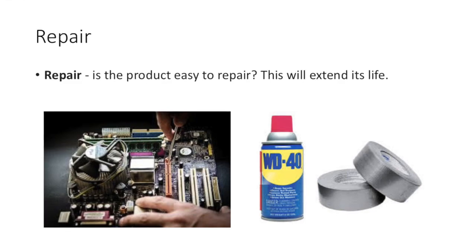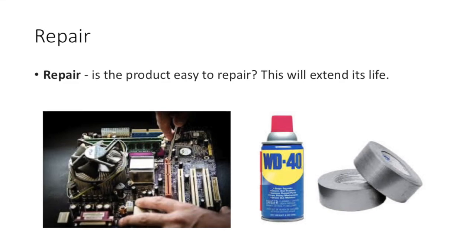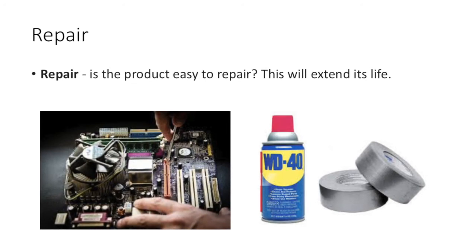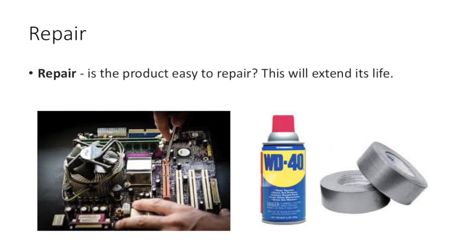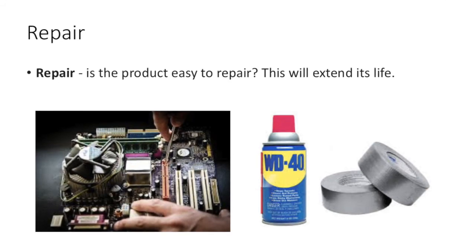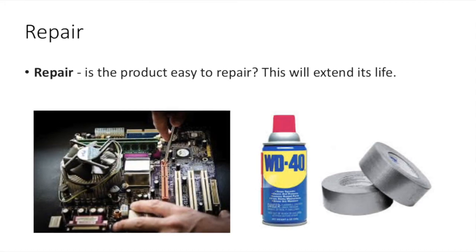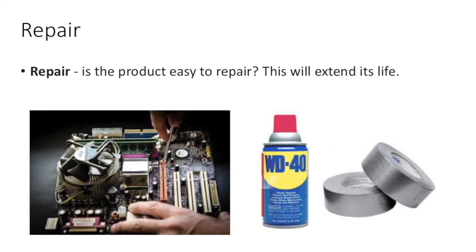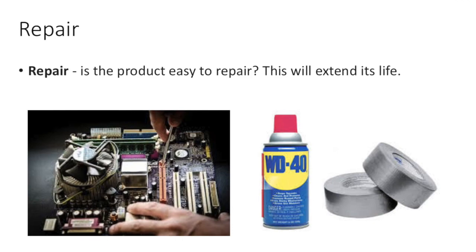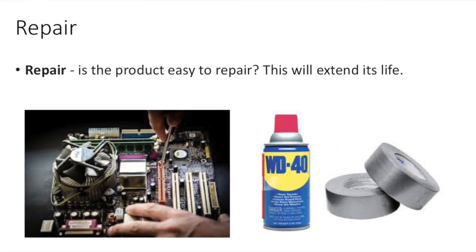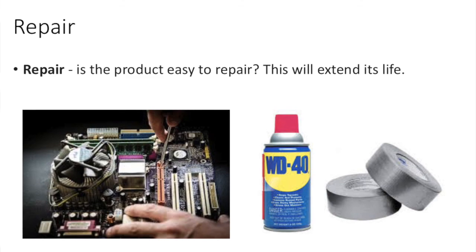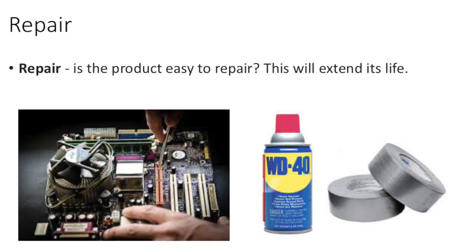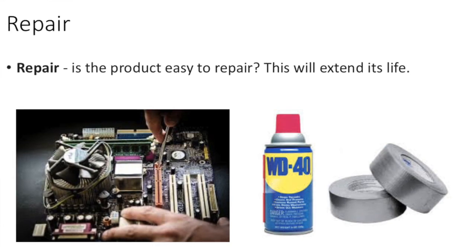There are products that have a planned obsolescence to them — for example, new consoles will break down after a certain number of years because those companies want you to buy new products. Things like mobile phones — people just have to have a new model. Sometimes it's very difficult to keep repairing products, especially if people want newer products and if technology is pushing those products forward and you want to keep up with that technology trend.